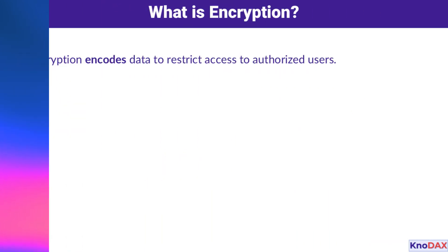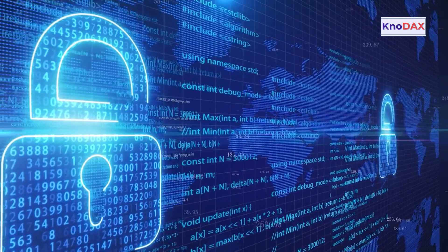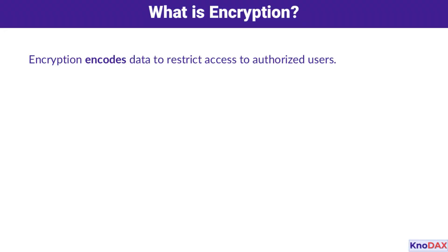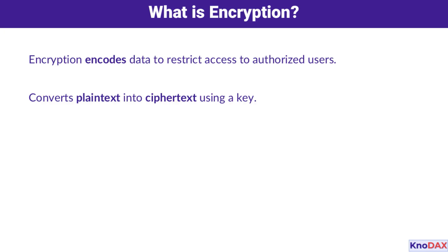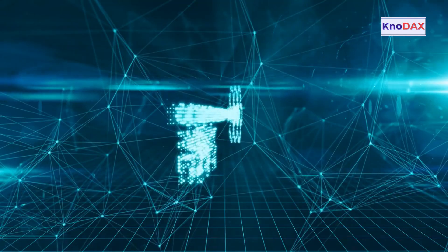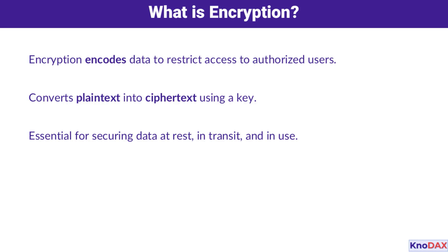So what exactly is encryption? Think of it as a way to lock your data with a unique key. It transforms readable data — plain text — into an unreadable format called ciphertext. Only authorized users with the right key can unlock it. This process is essential for protecting data at rest, in transit, and even while in use.